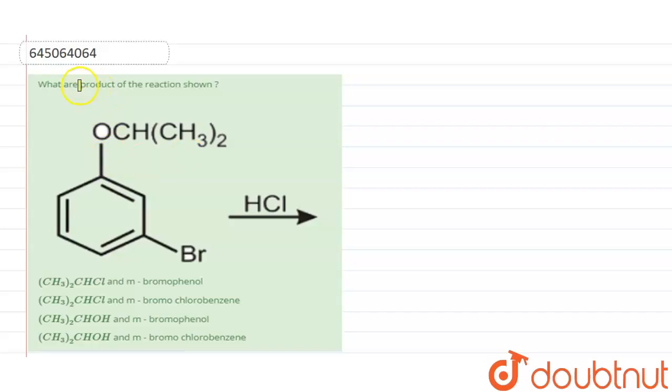Hello students, the question is what are the products of the reaction shown? So this is the reaction that is given to us and it is being treated with HCl. And these are the products formed. So let's see the solution here.